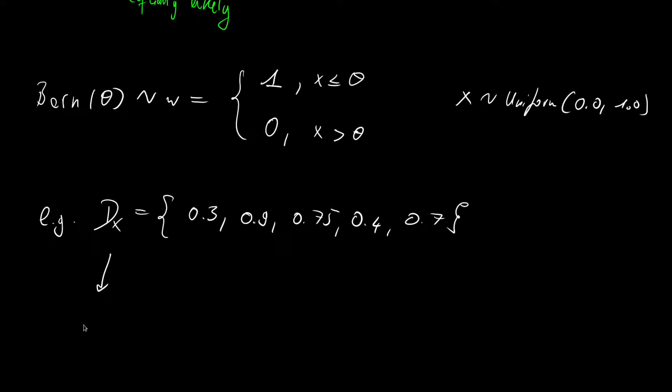Then we can transform this into a data set on W for the weather. And for this here we have, yeah, it's smaller than our theta of 0.7. So here we would have a 1. This is larger than 0.7, so it's a 0. This is also larger, it's a 0. This is smaller, it's a 1. And here we are at the boundary, and we decided that we are associating the boundary with good weather. So in this case it would also be a 1. And then we have a sample set, a data set, associated with the weather.